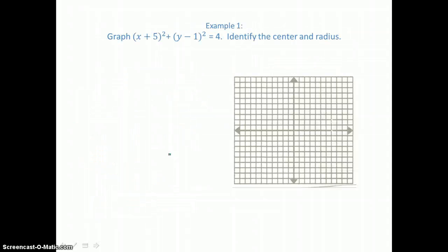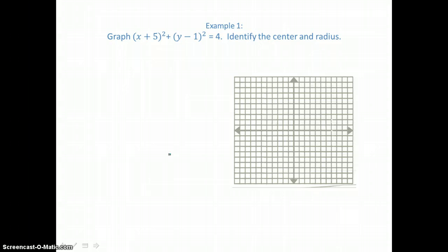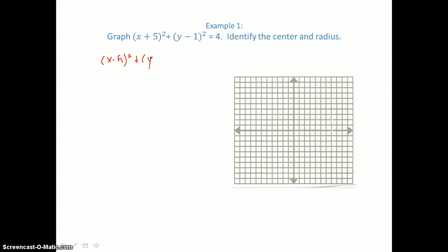In our first example, we're going to graph the quantity (x + 5)² + (y − 1)² = 4. Identify the center and the radius. This is the circle — both variables x and y are squared. This equation is in standard form: (x − h)² + (y − k)² = r².